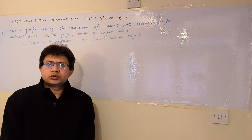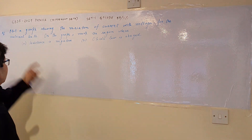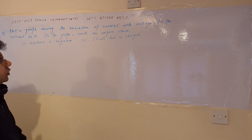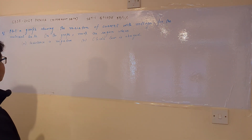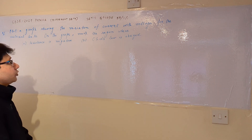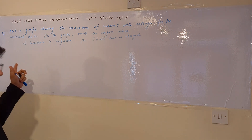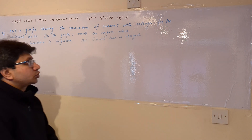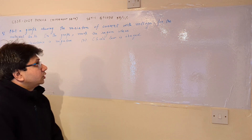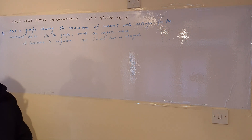Hello students, hope you are doing well. The question is: plot a graph showing the variation of current with voltage for the material gallium arsenide (GaAs). On the graph, mark the region where resistance is negative (Part A), and the region where Ohm's law is obeyed (Part B).